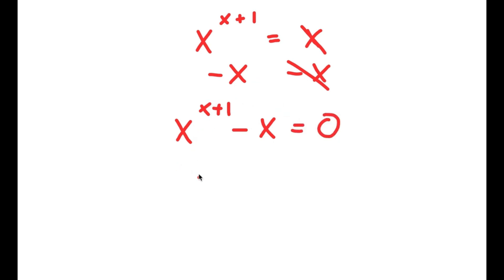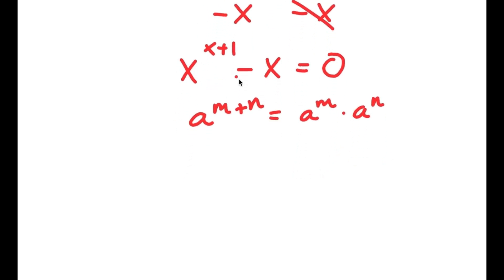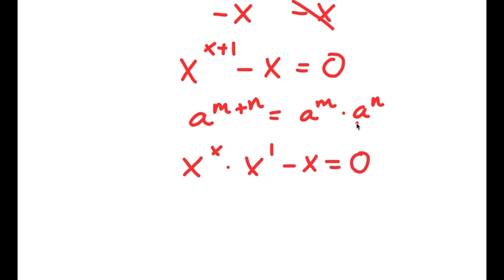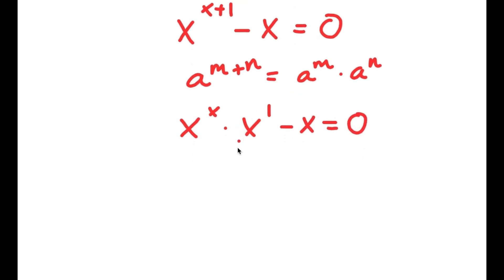If I have something in the form a to the power of m plus n, this is equal to a to the power of m times a to the power of n. So x to the power of x plus 1 is going to equal x to the power of x times x to the power of 1. Now I have this minus x is equal to 0. If I factor out x, I get x times x to the power of x minus 1 is equal to 0.